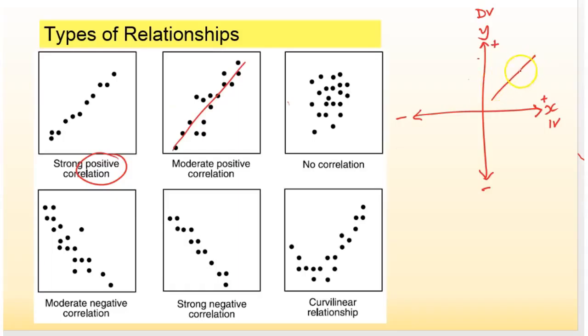If you have one variable increasing but the other decreasing, you end up getting a graph line that looks like this, and we call that a negative relationship or a negative correlation, because as our independent variable is increasing the dependent variable is actually getting smaller or going down.